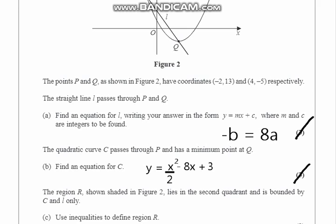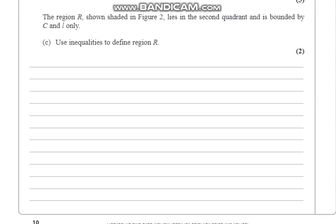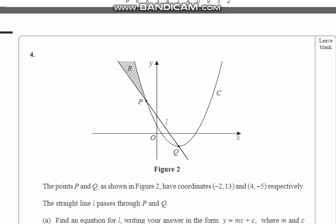Forming an equation, that's 3 and 3 marks done. Now moving to the C part. The region R shown shaded in figure 2 lies in the second quadrant and is bounded by C and L only. Use inequalities to define region R. And going back to the graph now, they said that R lies in the second quadrant. And our first quadrant is here, that's our first quadrant, and this is our second quadrant. And is bounded by the line L and C.